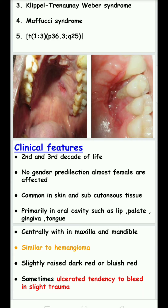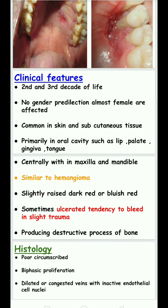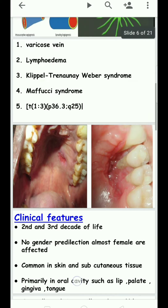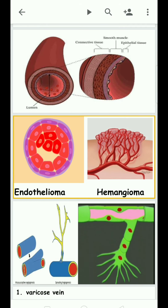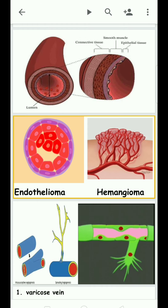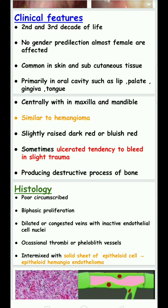Females are predominantly affected. It is most common in skin and subcutaneous tissue, and primarily occurs in the oral cavity — including the lip, palate, gingiva, and tongue. It looks like hemangioma, appearing dark red or bluish-red in color. Later it becomes ulcerated with a tendency to bleed on slight trauma, due to the high density of blood capillaries. It can also produce a destructive process of bone.